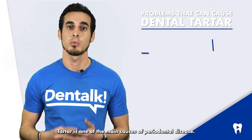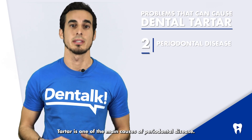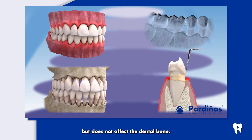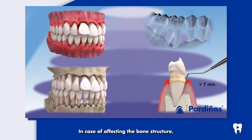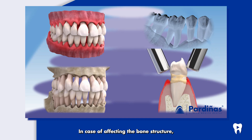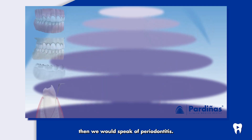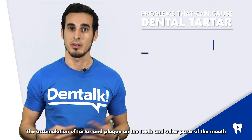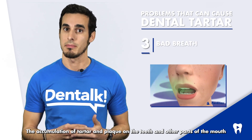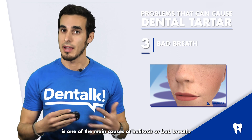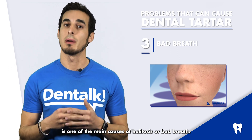Tartar is one of the main causes of periodontal disease. We speak of gingivitis when this disease causes inflammation of the gum but does not affect the dental bone. In case of affecting the bone structure, then we would speak of periodontitis. The accumulation of tartar and plaque on the teeth and other parts of the mouth is one of the main causes of halitosis or bad breath.